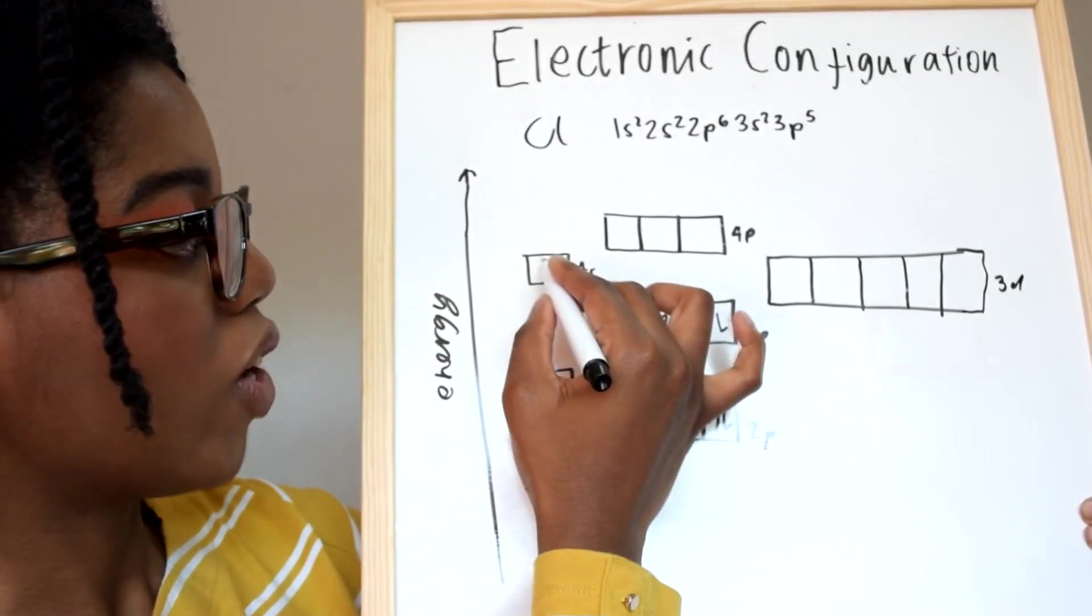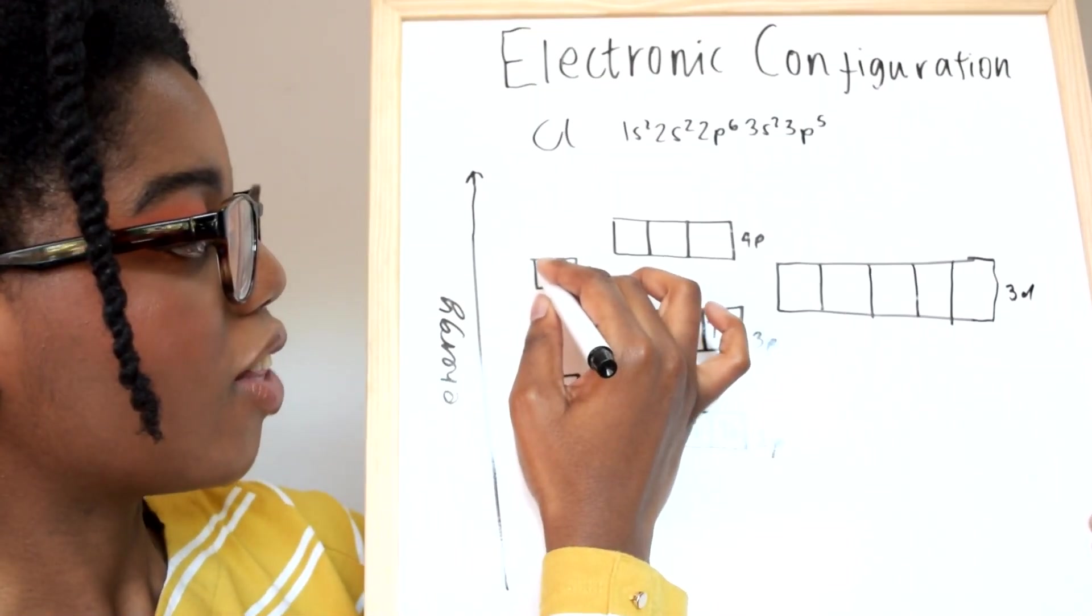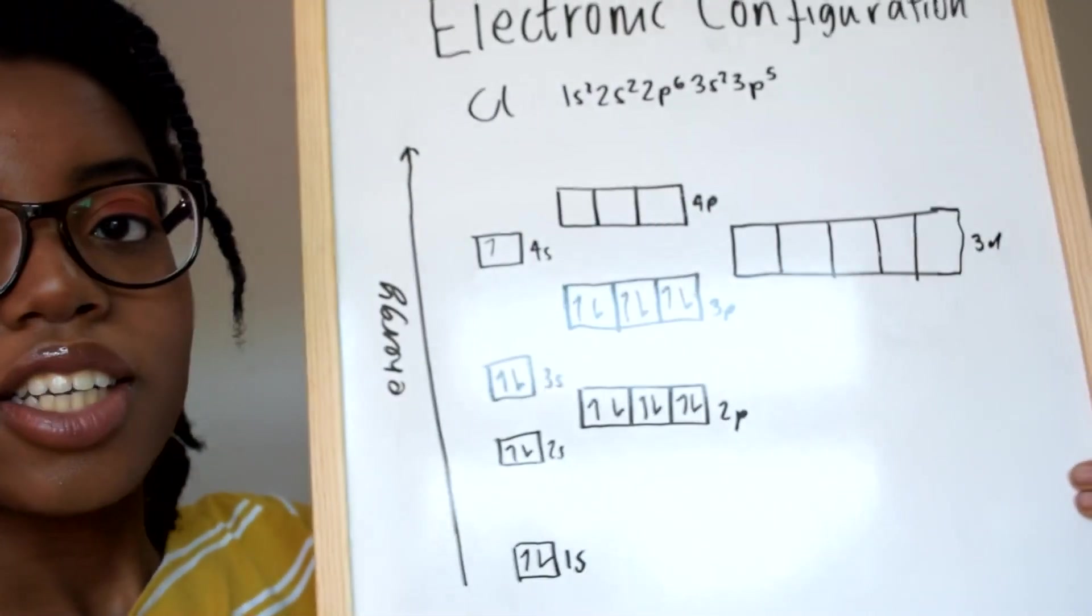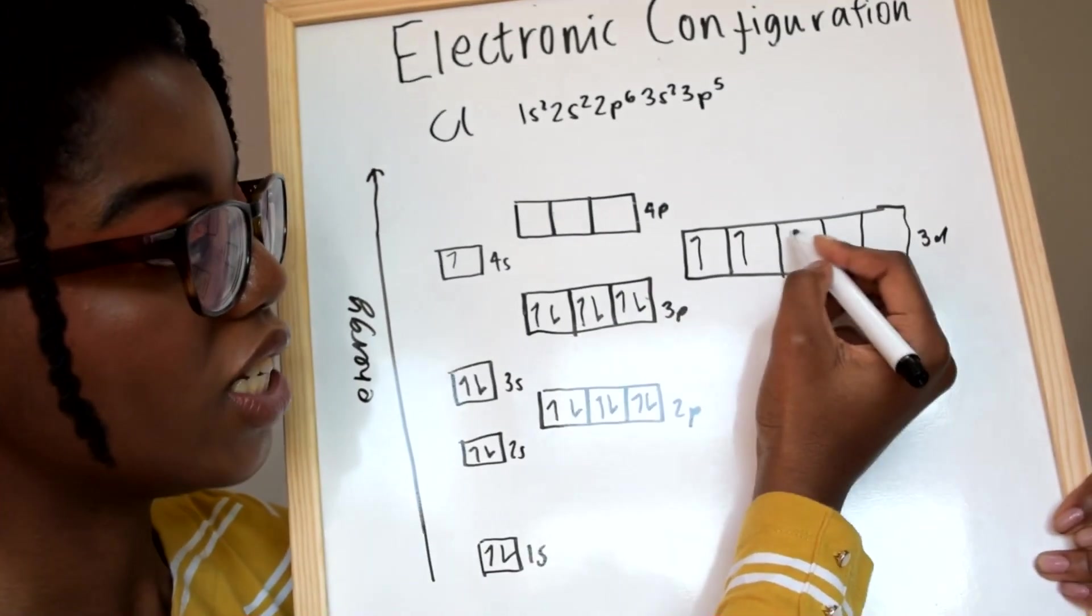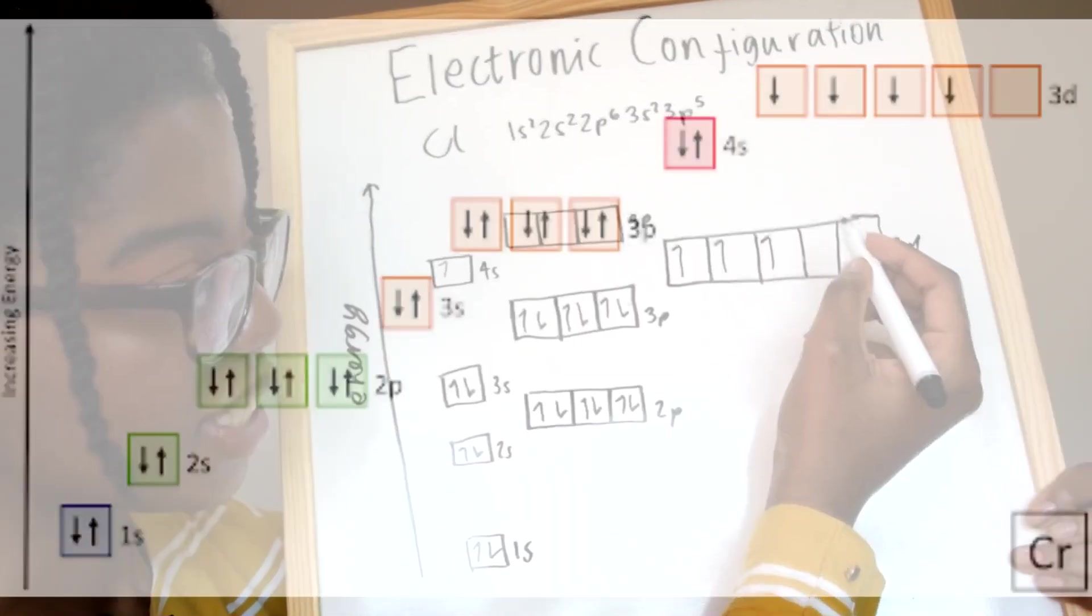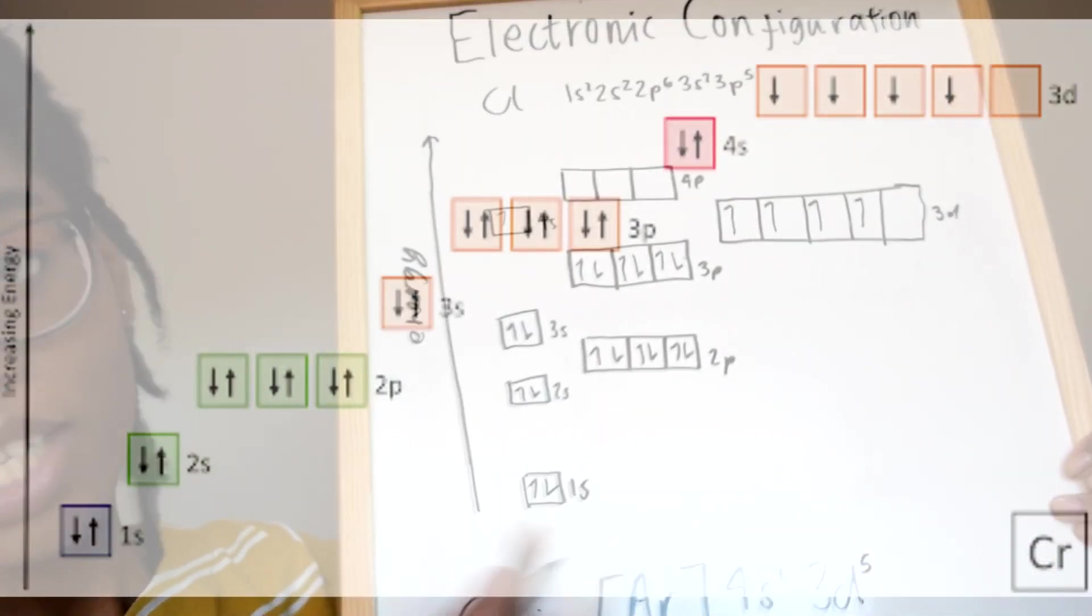What happens here is that one of the electrons that would have been in the 4s2 sub-orbital is actually put into the 3d orbital because otherwise it would be left like this, full.